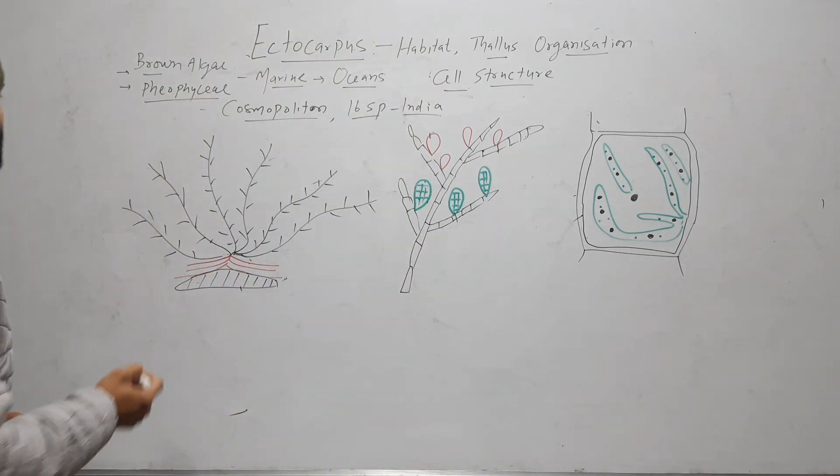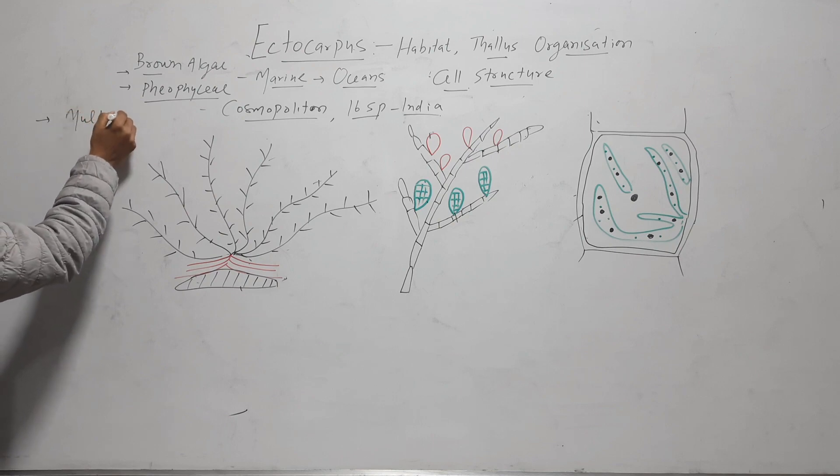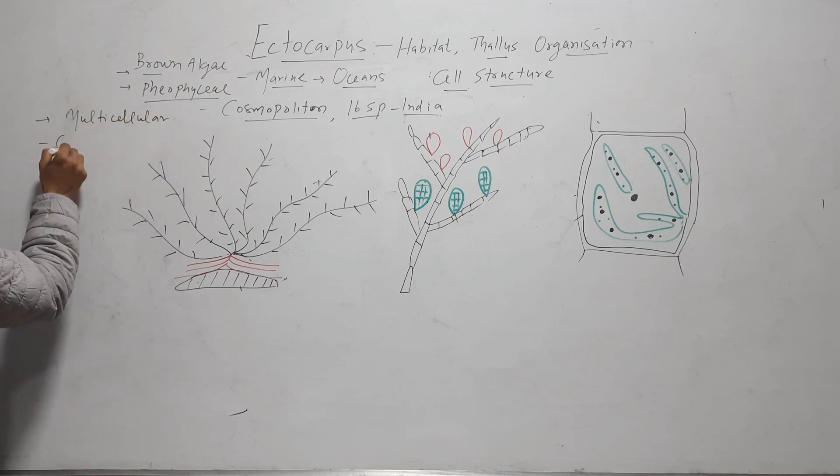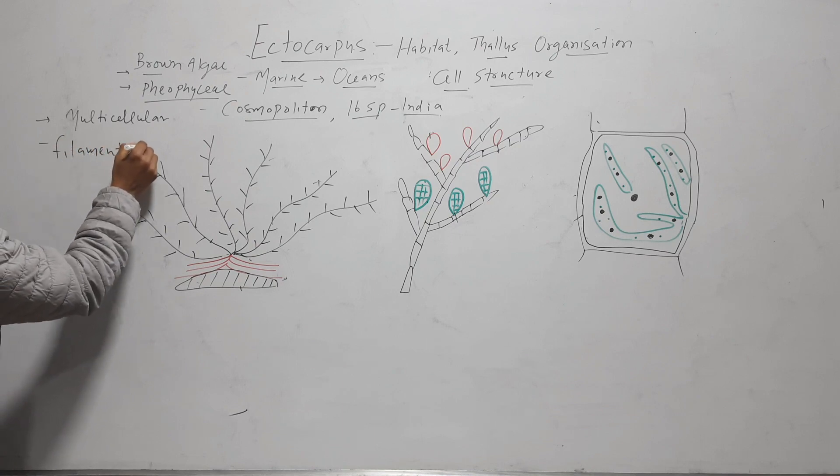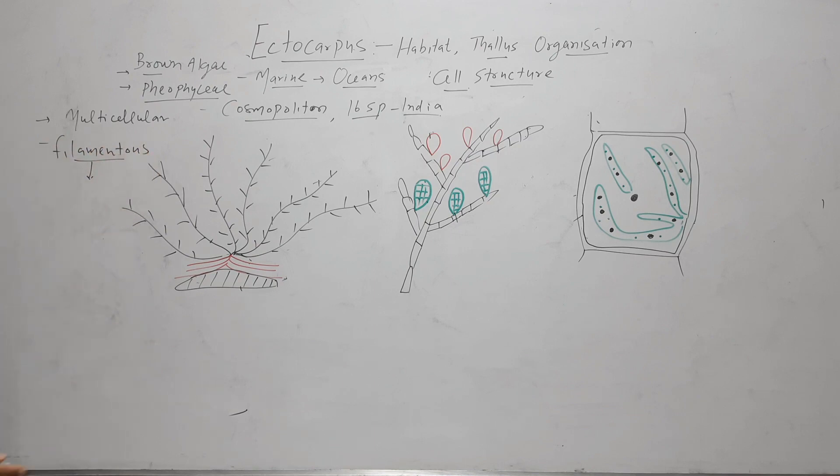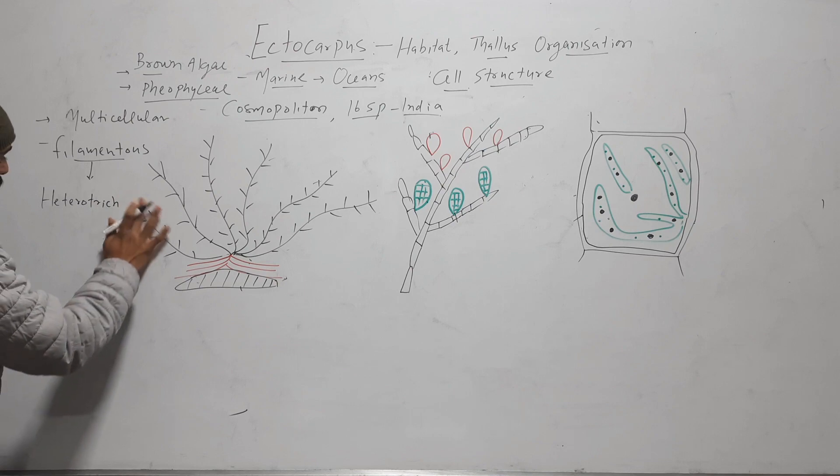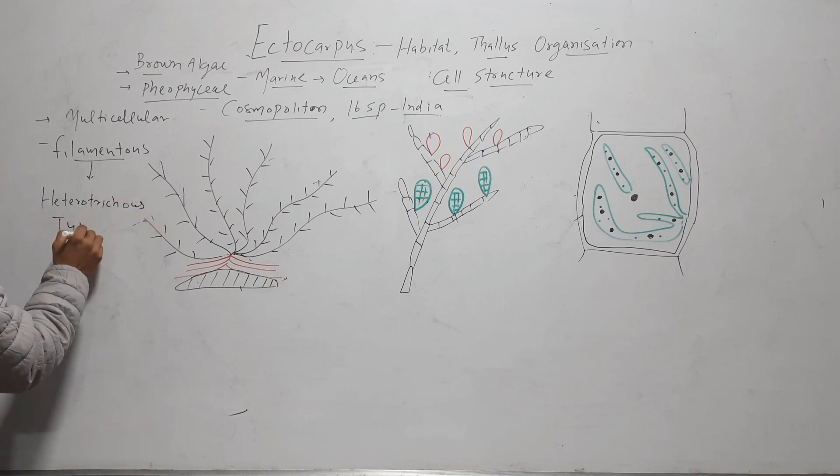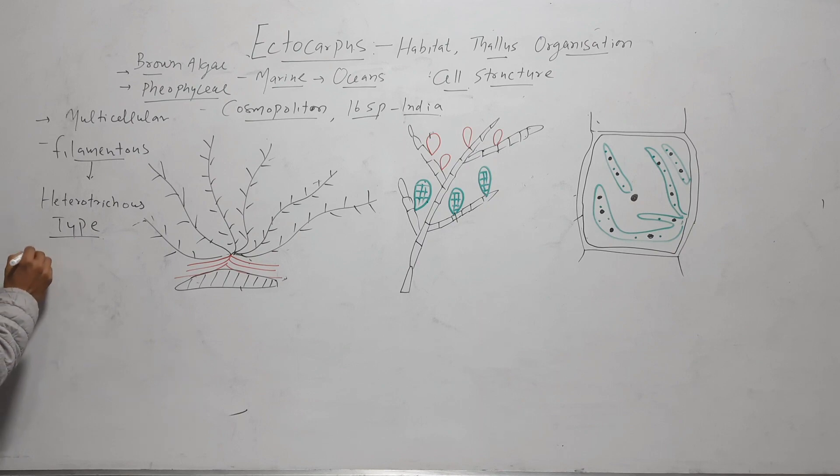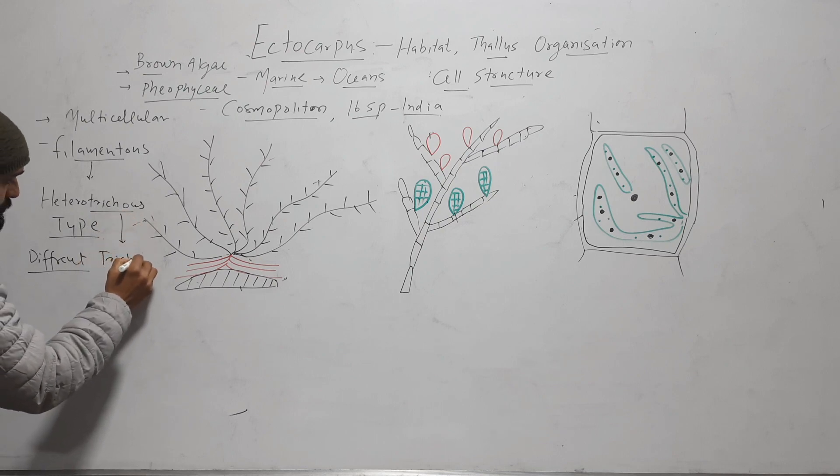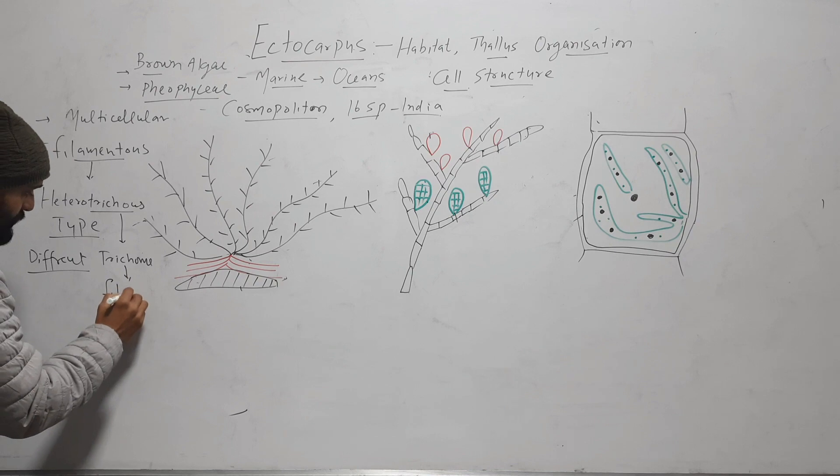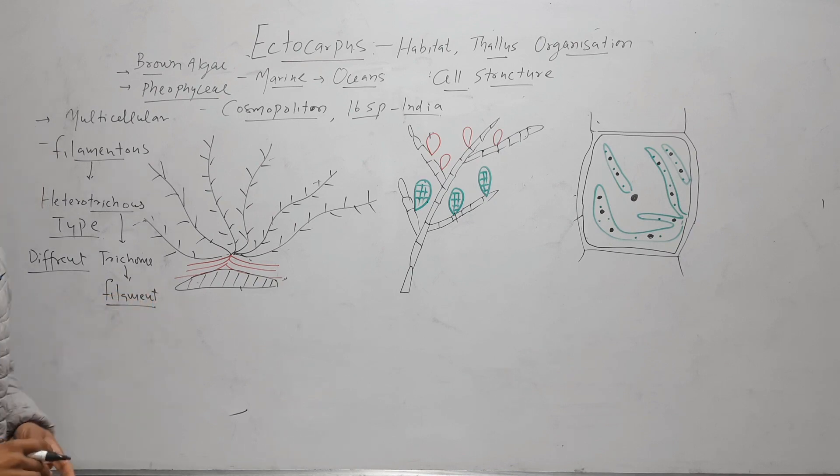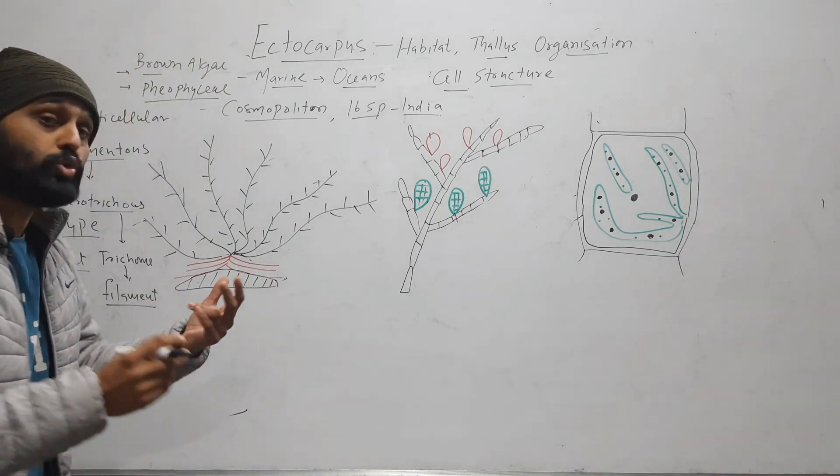Now coming to thallus organization, thallus of Ectocarpus is multicellular and filamentous. In filamentous, its thallus is heterotrichous type. Heterotrichous means hetero means different. Trichus is taken from word trichome. Trichome means filament. Means a thallus that has different filaments. So this thallus has two types of filament.